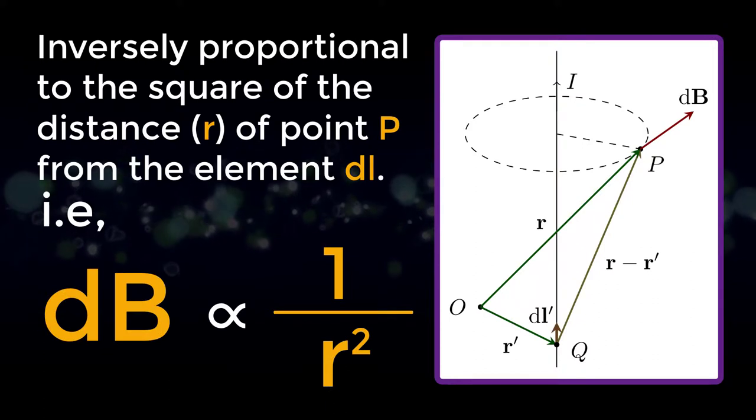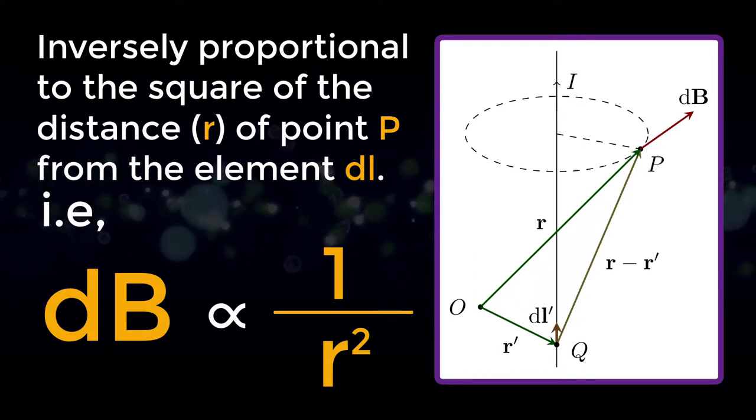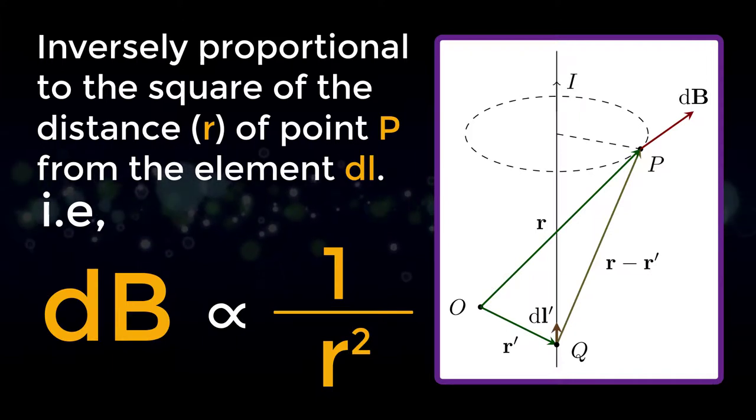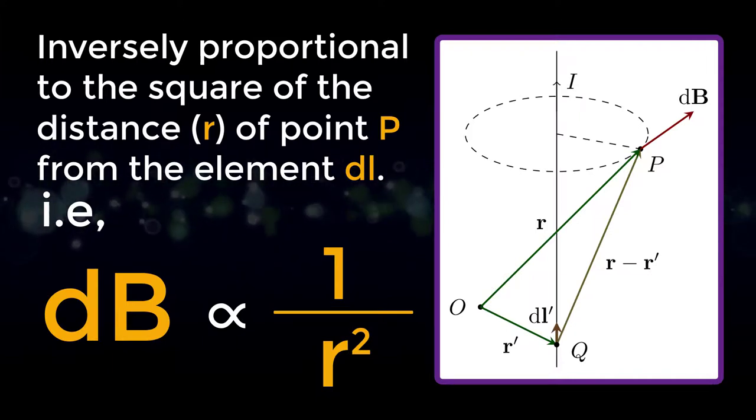Inversely proportional to the square of the distance r of point P from the element dl, that is dB inversely proportional to r square.